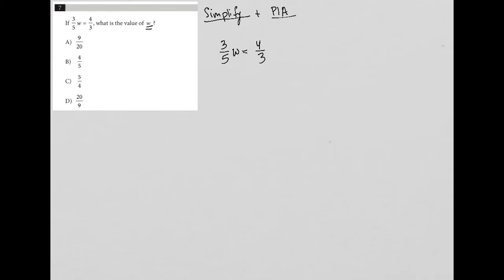I'm going to start off with the simplify strategy. If I want w isolated, I'm going to multiply both sides of my equation by the reciprocal of three-fifths, which is five-thirds. That means the fives and threes cross-cancel on the left-hand side, leaving me with w equals—I can multiply directly across here. Four times five is 20, three times three is nine.